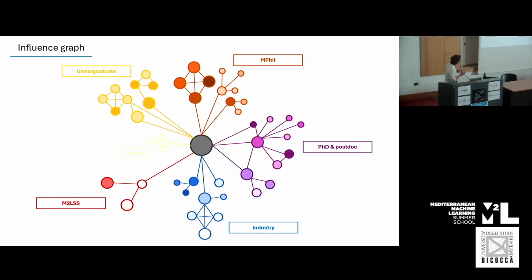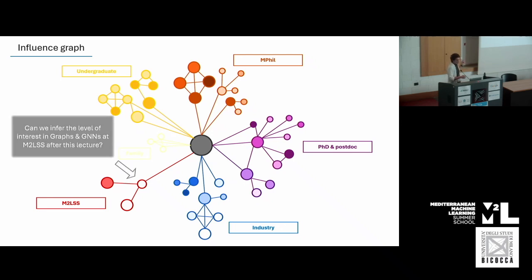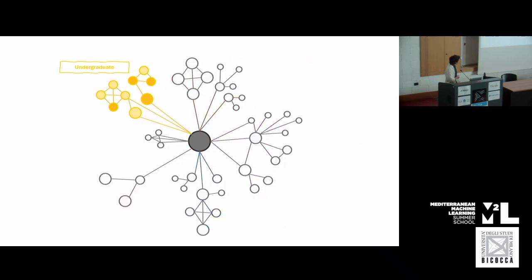The idea is to give you one of the different ways you can get into graphs or graph neural networks, because there are actually many different angles and perspectives that can take you to working in this area. I've added an extra entity in the influence graph — the M2L summer school — and after this lecture I want to ask whether I've created some influence on you, and maybe if anyone has ideas on how we can use graph neural networks to make that inference.